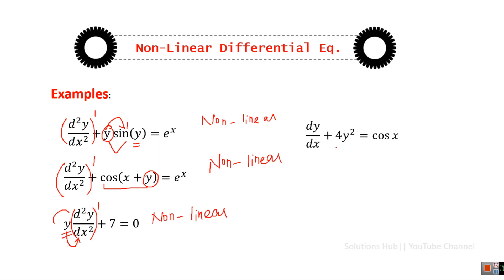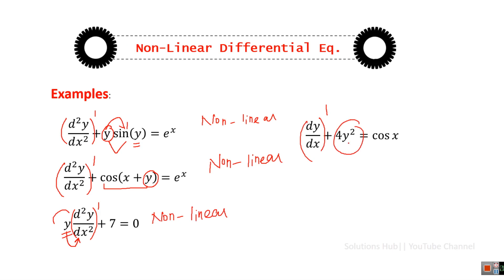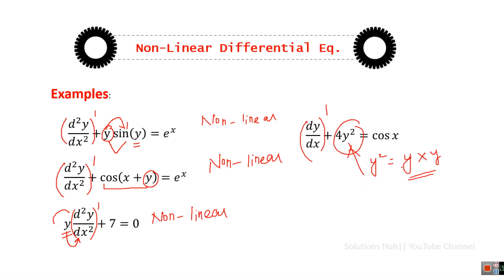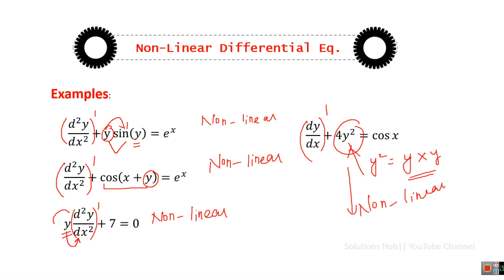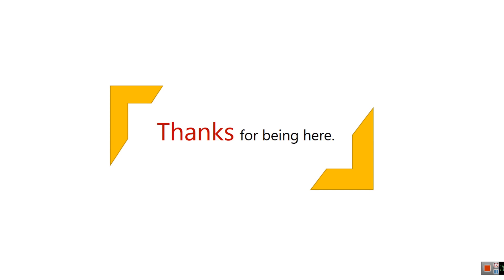The last example is also nonlinear. The order is 1 and degree is 1, which is fine, but the term y² appears — that is, the dependent variable y multiplied by itself. The product of the dependent variable with itself is not allowed in a linear differential equation. So this is a nonlinear differential equation. This sums up today's lesson on the difference between linear and nonlinear differential equations. Thank you so much for being here.